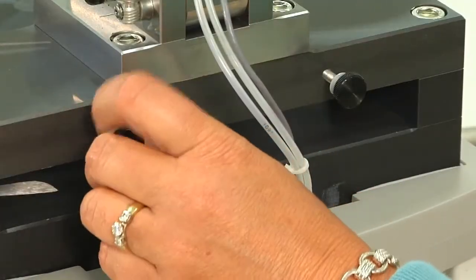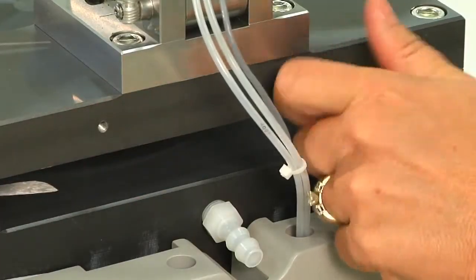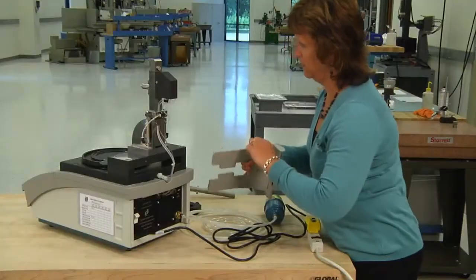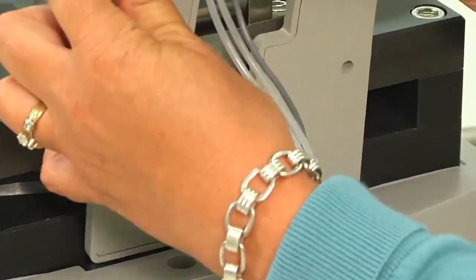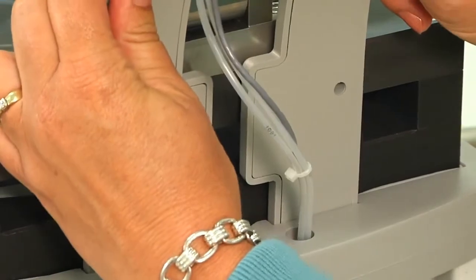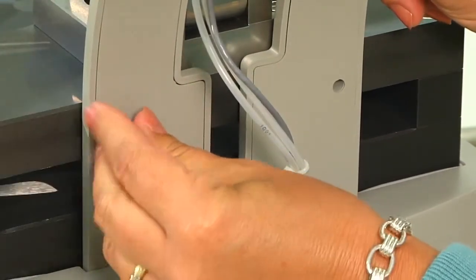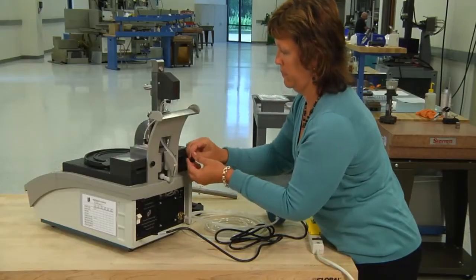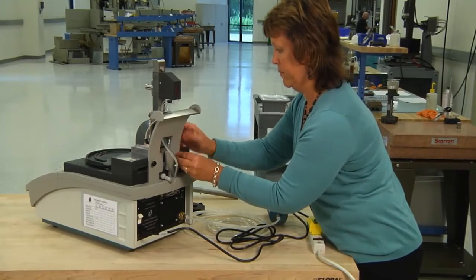The third step is to attach the cable management bracket on the back of the polisher. Remove the two thumb screws on the back of the machine and slide the cable management bracket over the drain hose supply and into the slots provided. Reattach the screws to secure.